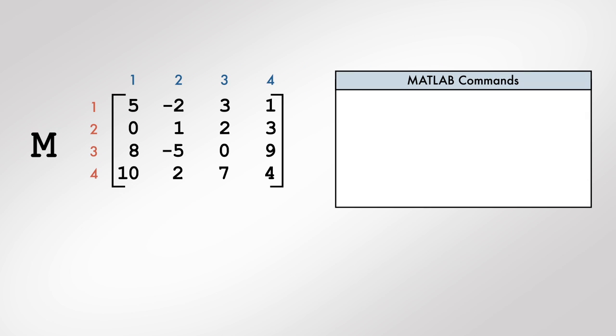To extract a single element from a matrix, we start by identifying the row and the column number and use them in this syntax. Notice that in the MATLAB command, we enter the variable name, followed by the open parenthesis, the row and the column numbers, and the close parenthesis.